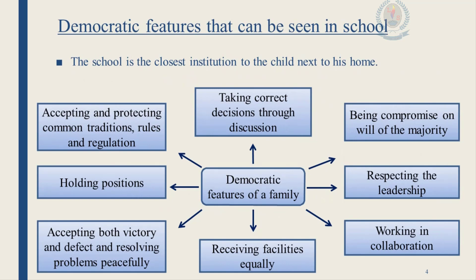Now let's look at democratic features that can be seen in school. The school is the closest institution next to your home. From childhood to adolescence you lead a life as a student. All of you get the opportunity to improve your skills and capabilities by making use of the freedom, resources, and opportunities available in the school. This will enable you to achieve the objectives of life successfully. Each and every one of you should try to achieve objectives that are more useful to yourself and to the society.